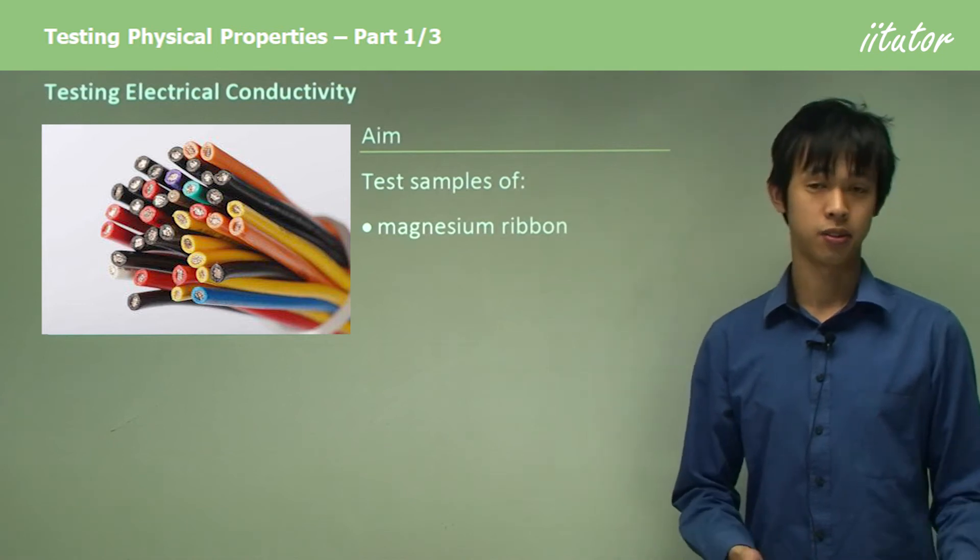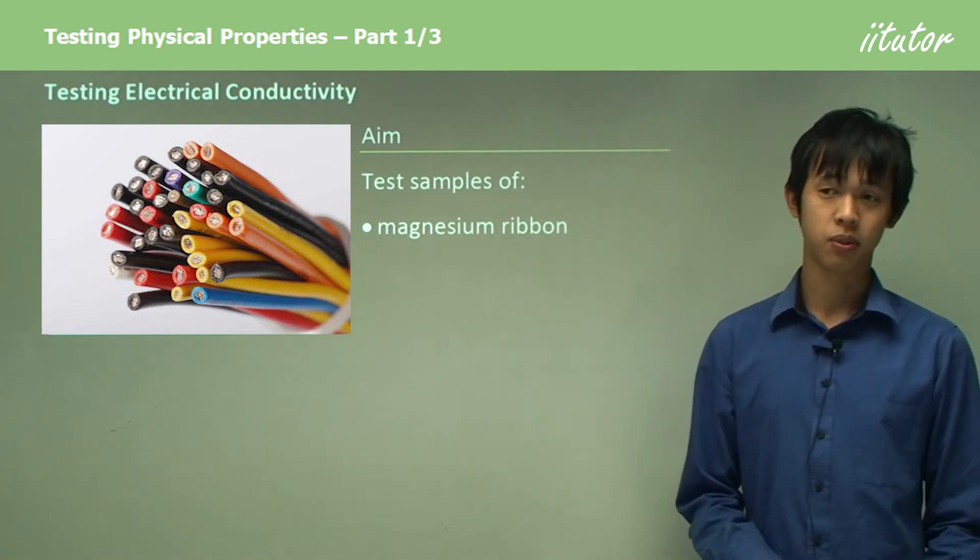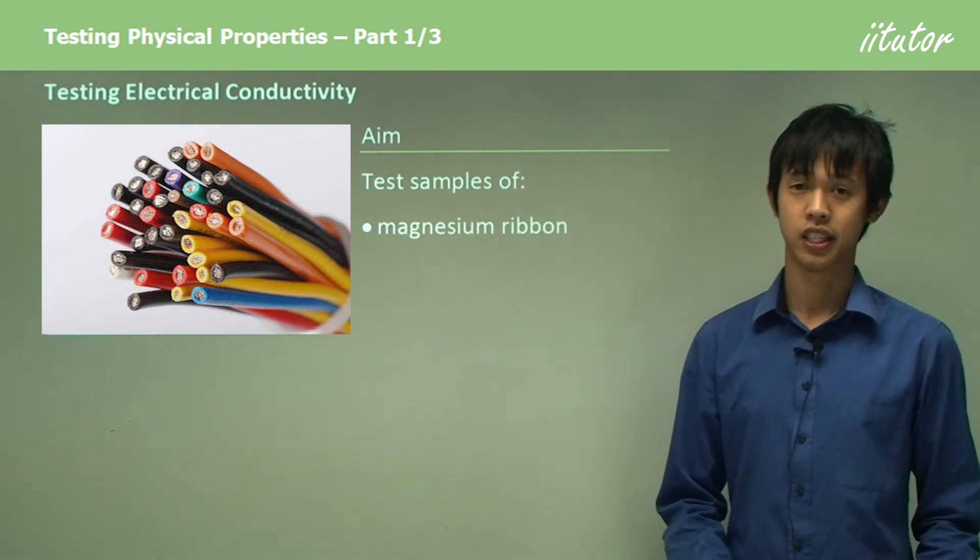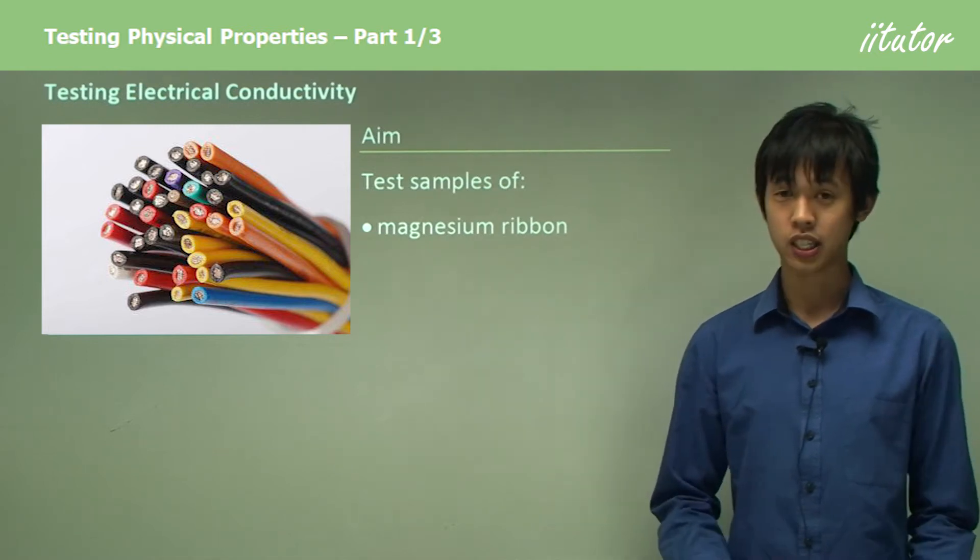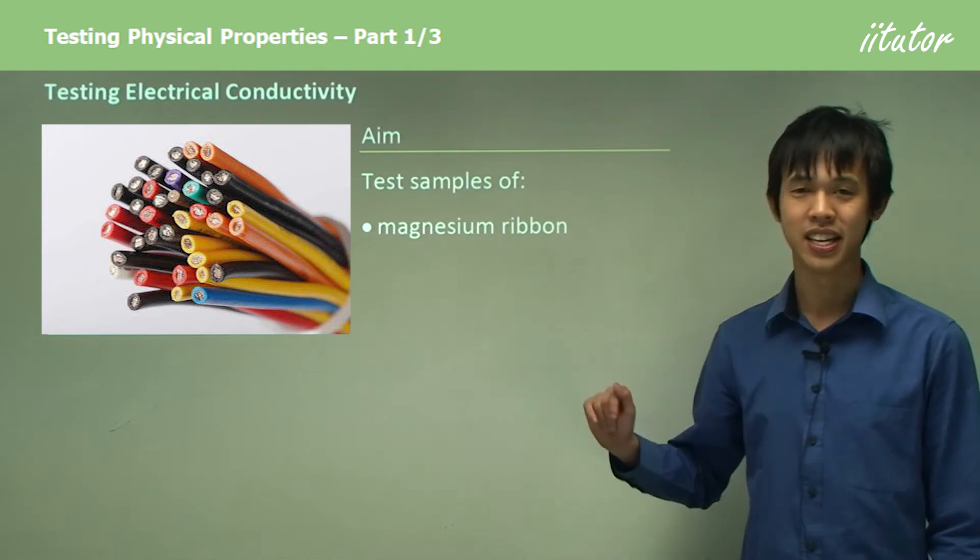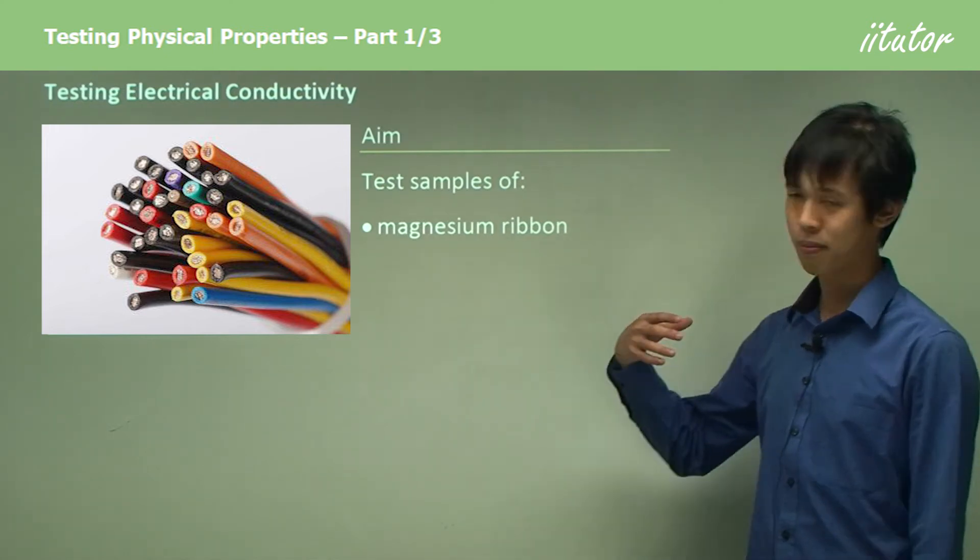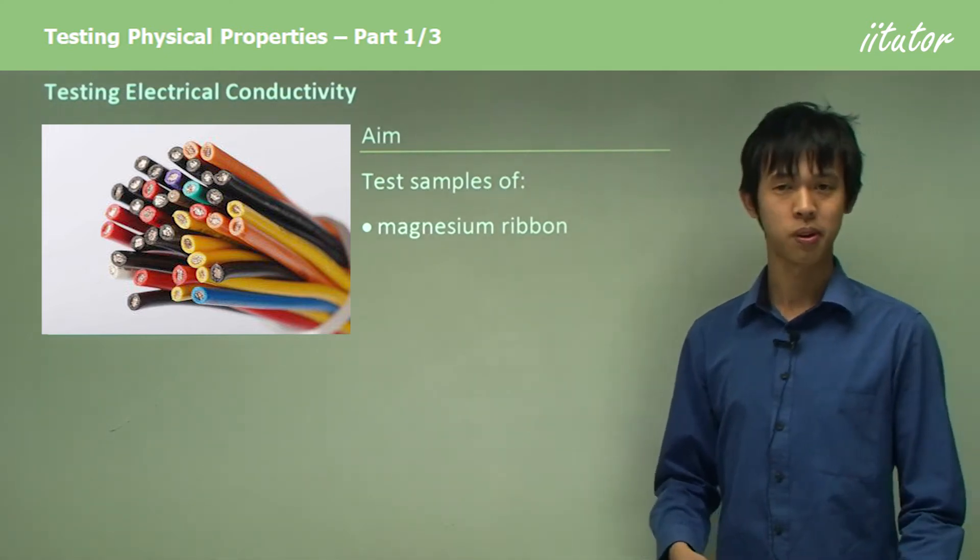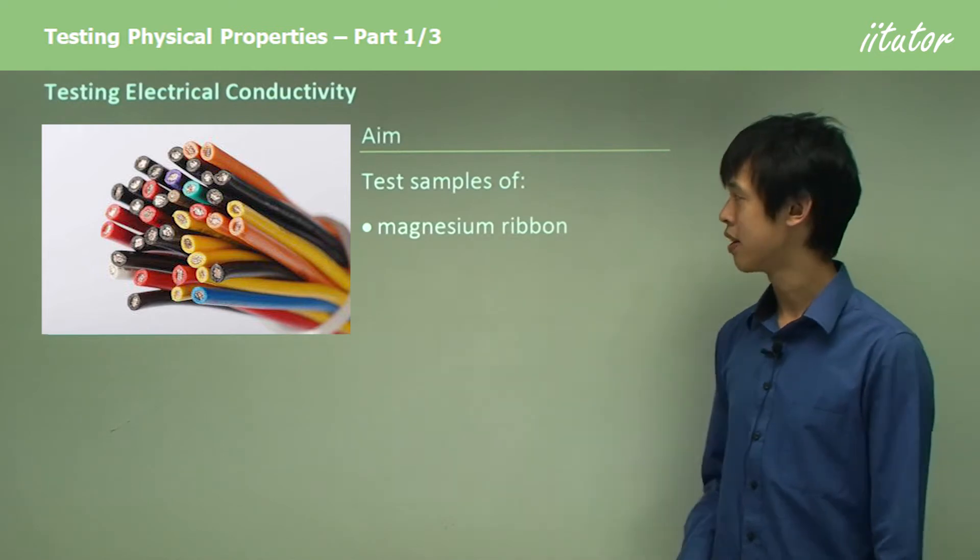The first test is electrical conductivity. This is easy to test because electricity is really prevalent. Maybe a hundred years ago when electricity was not so widespread, this would not be so easy. But because we're in the electrical age or the computer age, this one's much easier.